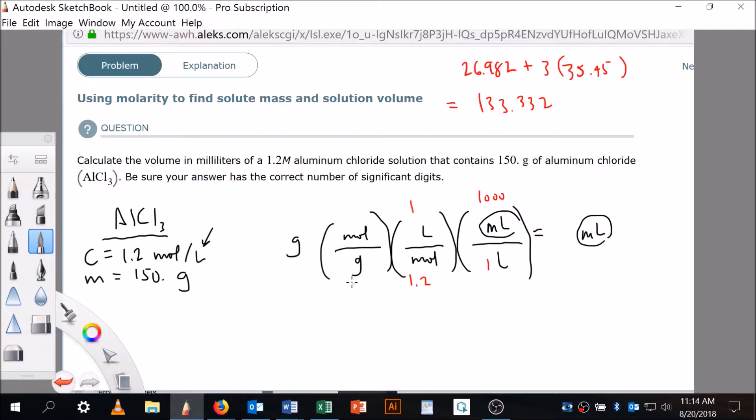And I'm gonna say this is 133.332 grams per one mole, and it looks like my grams is gonna be 150. Okay, so now I'm gonna go through and multiply 150 times a thousand and divide by these two numbers, and that'll be my answer. I'll do that right now on my calculator - you should do the same thing.